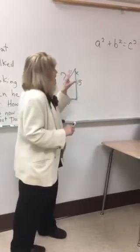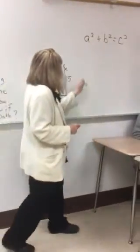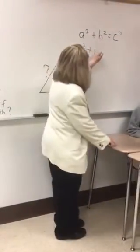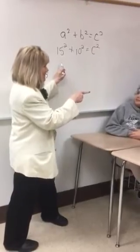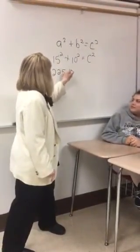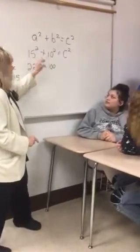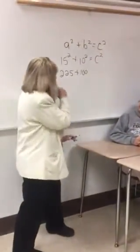Which letters represent the two legs? A and B. So instead of A squared, I'll put 15 squared. Instead of B squared, I'll put 10 squared. And then you always bring down your C squared. What's 15 squared? 225. What's 10 squared? 100. A common error is to say 10 times 2 is 20 — but that's not right. And then you bring down your C squared.